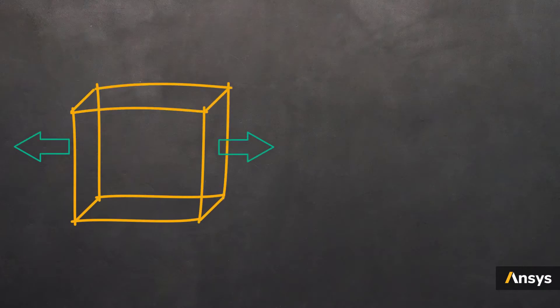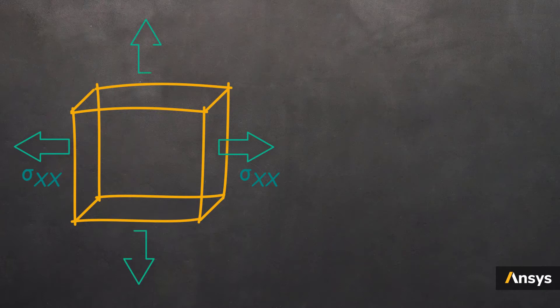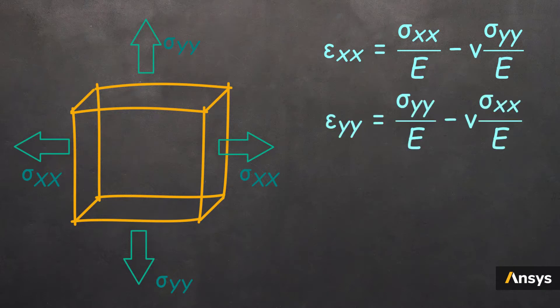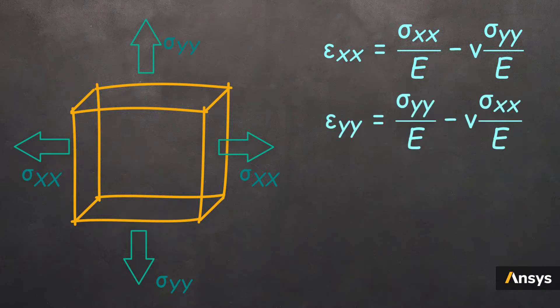Here, the strain in x-direction is influenced by both the applied stress in x-direction and the Poisson's strain due to the stress applied in the y-direction. So, the strain epsilon x-direction is going to be sigma xx by E minus nu times sigma yy by E. Similarly, the strain in y-direction is going to be epsilon yy equals to sigma yy by E minus nu times sigma xx by E.